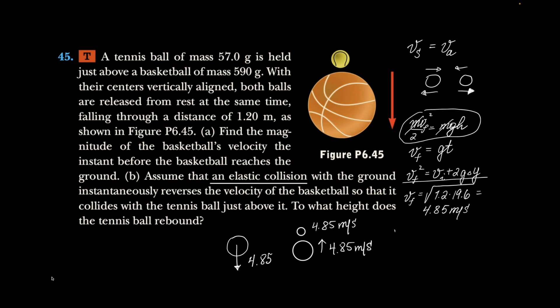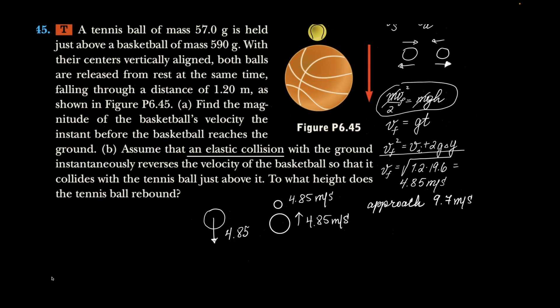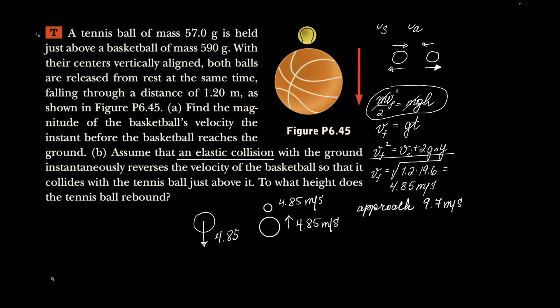So with an elastic collision, approach is happening at the speed of 9.7 meters per second, the velocity or speed with which the two balls are approaching each other. Then after they collide, they collide elastically. So we need to figure out to what height does the tennis ball rebound.